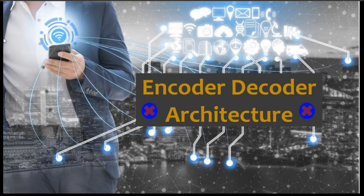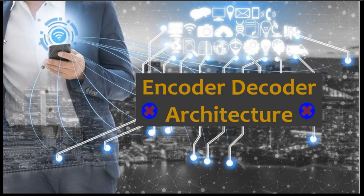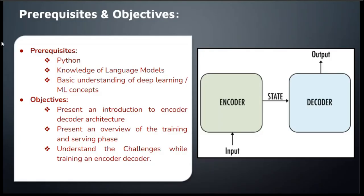Thank you so much. Hello everyone, I hope you are doing great. Before we start exploring the encoder and decoder architecture, let's make sure we are on the same page. In the previous lecture, we learned that transformers are like the building blocks of large language models, structured around two main parts: the encoder and the decoder. For this, we need a good grasp of Python, some understanding of large language models, and basic knowledge of deep learning and machine learning concepts.